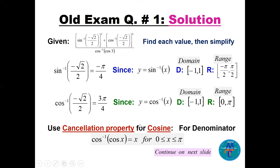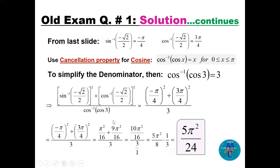We can use the cancellation property for the denominator: cosine inverse of cosine x equals x, provided x is between 0 and π. We check: angle 3 is between 0 and π (since π ≈ 3.14), so cosine inverse of cosine 3 equals 3 directly.